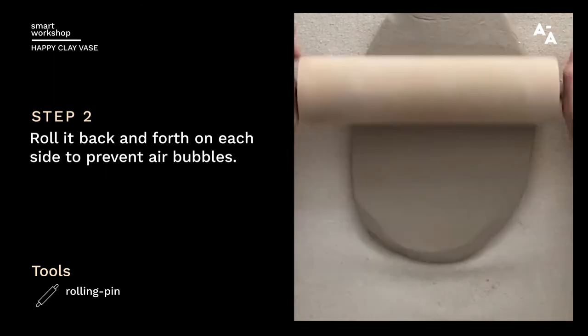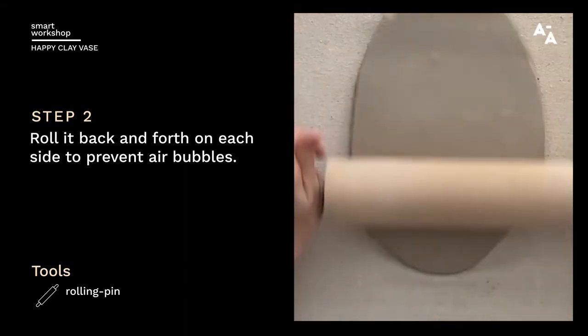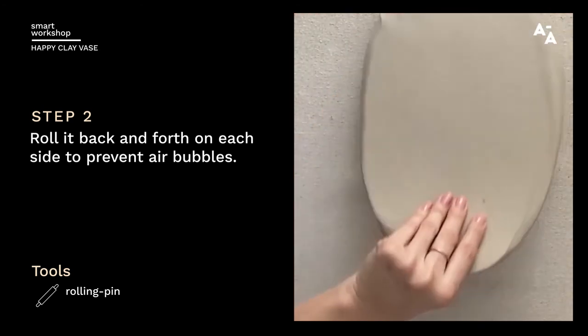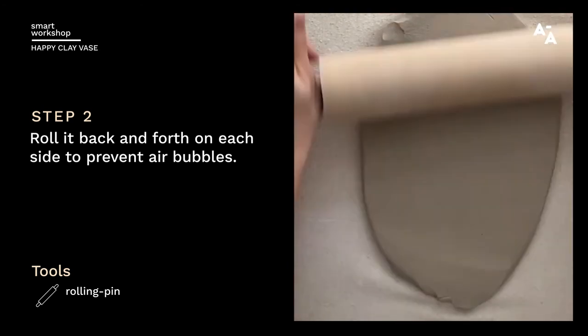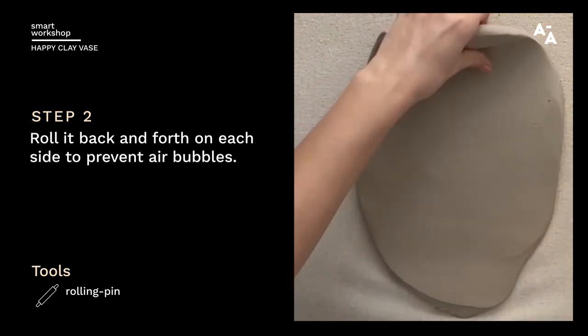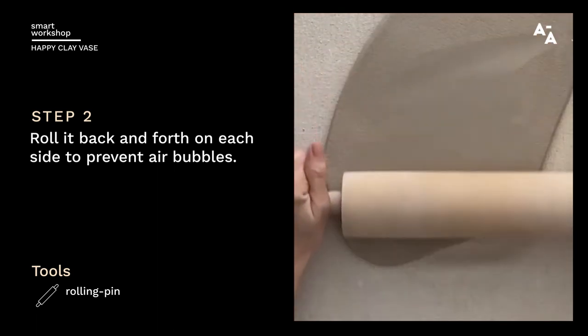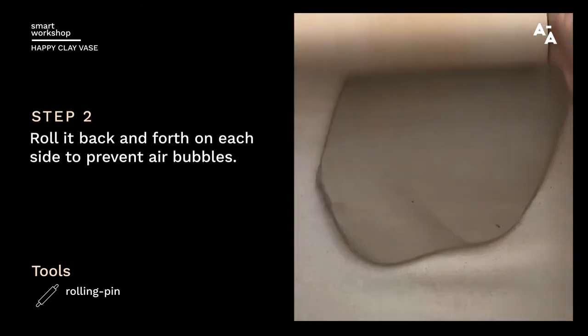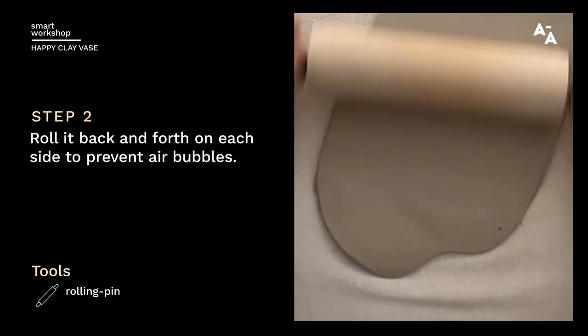And then we'll just roll it back and forth on each side to prevent air bubbles, to catch them. And I'm trying to get the slab to about a quarter inch thick, fairly even.